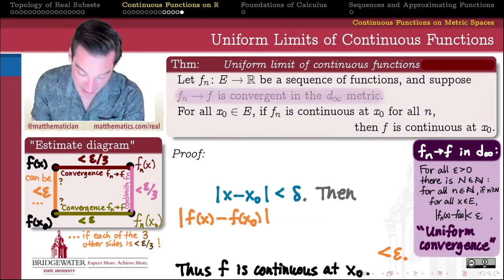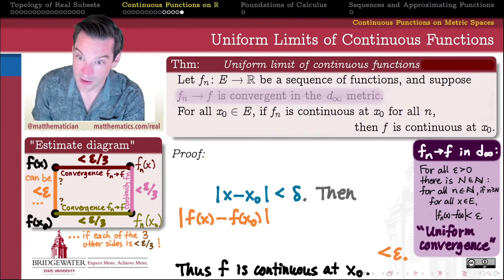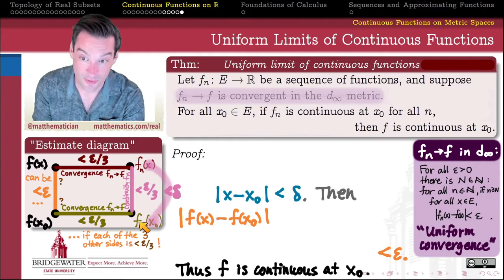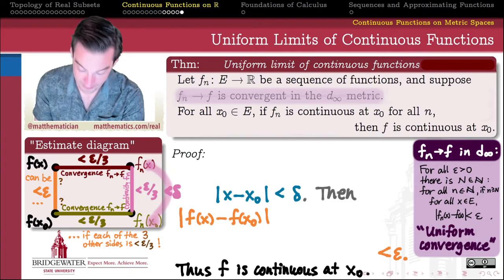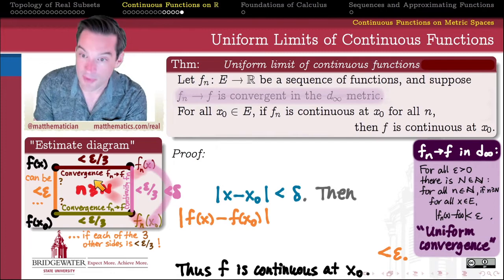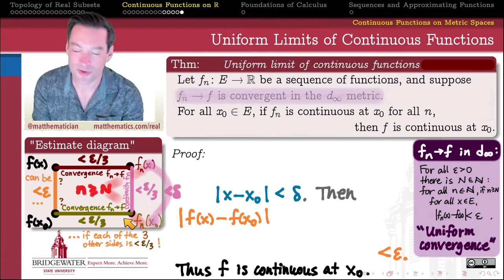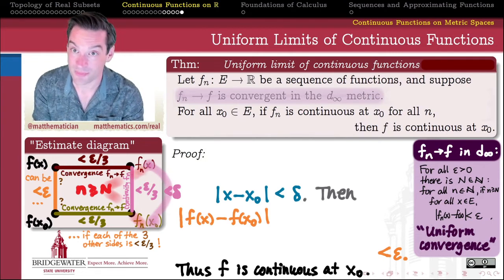All I have to do is fill in the details — how do I get each of these distances to be less than epsilon over three? I invoke the definitions. From the definition of continuity, since F_n is a continuous function, I can make the difference between its output values less than epsilon over three by making the input values within some distance delta. On the other two sides, I can make the distances between f(x) and F_n(x), and likewise at x0, less than epsilon over three by choosing a sufficiently large little n — getting epsilon over three close to my limiting function.